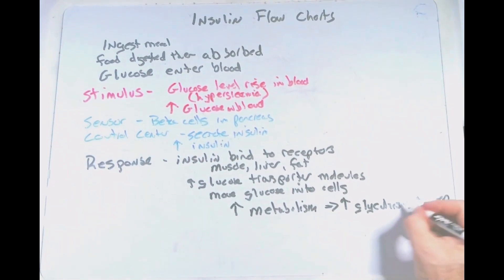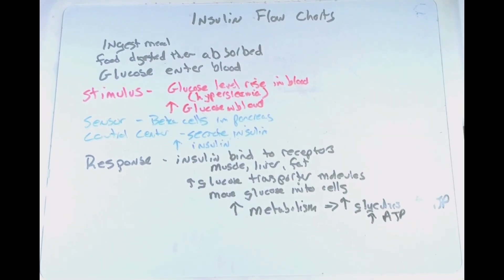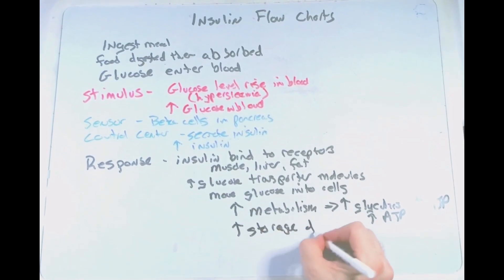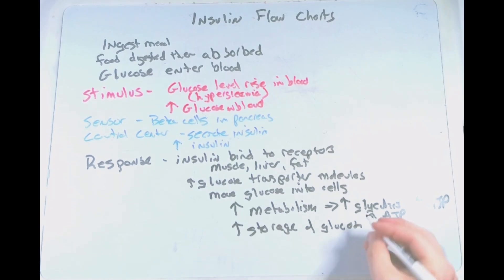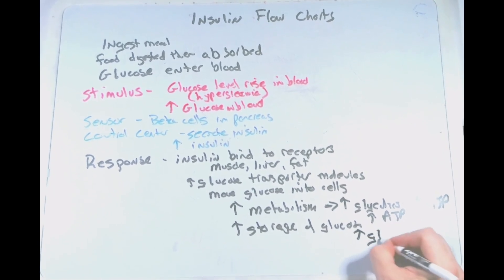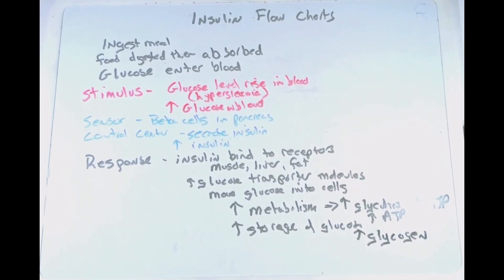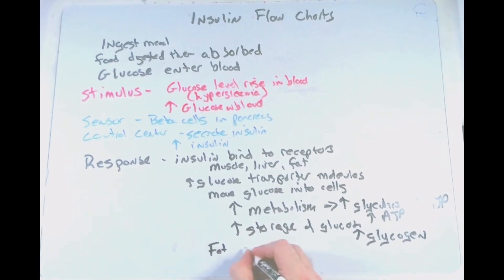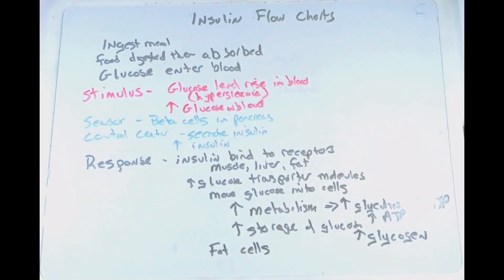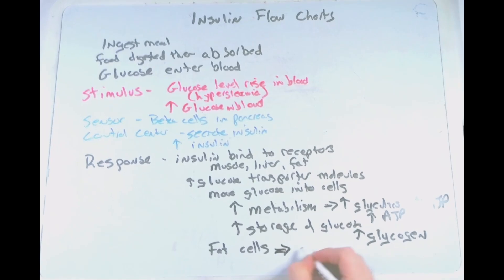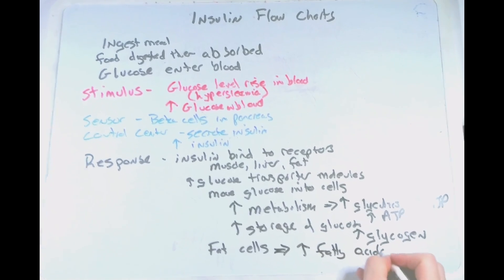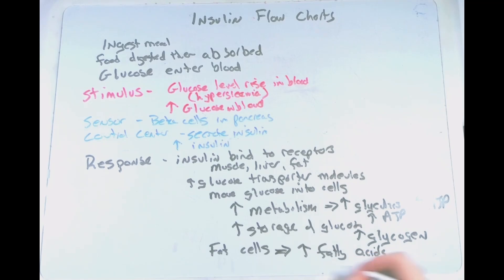Insulin also stimulates the storage of glucose. In cells like liver and muscle cells, glucose is brought in and stored, resulting in an increase in glycogen — a polymer where glucose monomers are stored for a later period of time. Additionally, within fat cells, products of glycolysis are used to increase the production of fatty acids, and those fatty acids contribute to an increase in triglycerides.